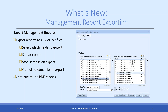Management report exporting is another feature that had been requested quite a bit — the ability to export management reports to a CSV or text file. Now you're able to do that. You can even save your settings. The really nice thing is you get to specify which fields — essentially which columns — are sent to your CSV or text file, and you can even set a sort order for those fields. This lets you get those reports into Excel if you want, so you don't have to use just the PDF version.